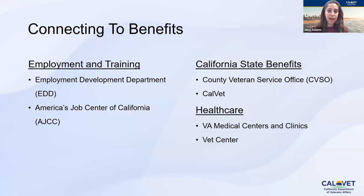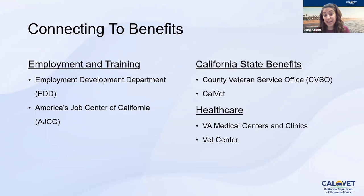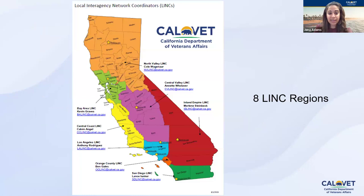Our LINKs are building relationships to get discounts and benefits at places — as simple as finding a discounted washer and dryer. They work closely with County Veteran Service Offices, all CalVet divisions, VA medical centers, and vet centers. They provide leadership and advocacy for veterans and their dependents. If you want to talk to the LINK in your area, let us know where you are and we'll connect you.